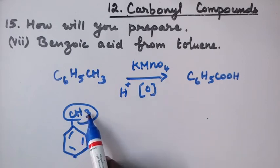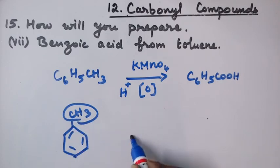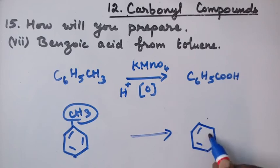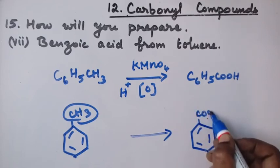If it is a methyl or ethyl or propyl, the side chain, the whole thing will be converted to COOH. And one requirement is this carbon must have hydrogen.